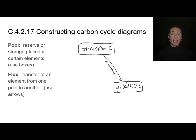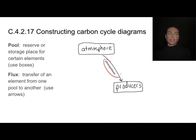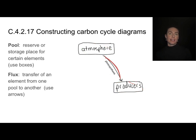So here's an example of a way to get this started. There exists a pool of carbon dioxide in the atmosphere. That then is transferred to producers during the process of photosynthesis. So here are my pools, here is my flux. Notice I'm showing an arrow to show which direction it goes.